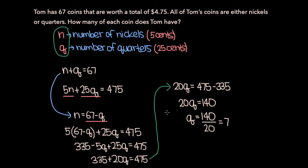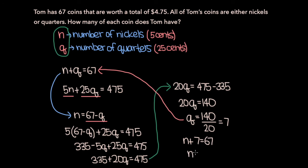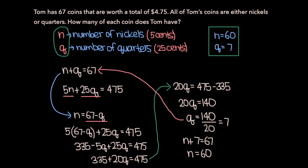Now we plug Q equals 7 back into the first equation. N plus 7 equals 67, so subtracting 7 from both sides gives N equals 60. Our final answer is that Tom has 60 nickels and 7 quarters.